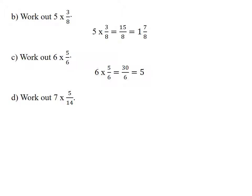7 times 5 over 14. 7 times 5 is 35. 14 into 35 goes 2 times, so the answer is 2 and a half.